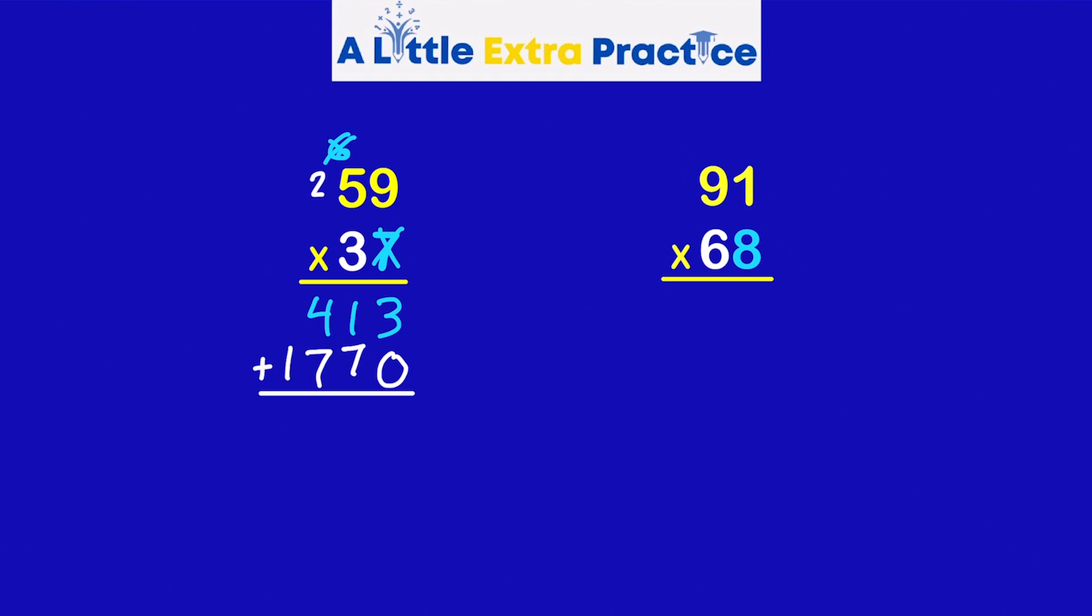So my partial product is 413, 1770. Add these together. And my product is 2,183.